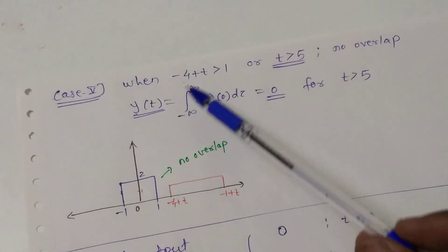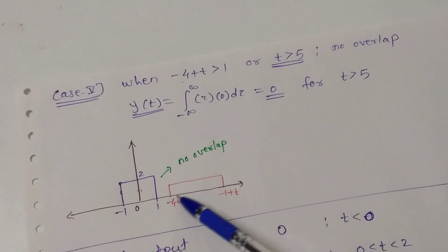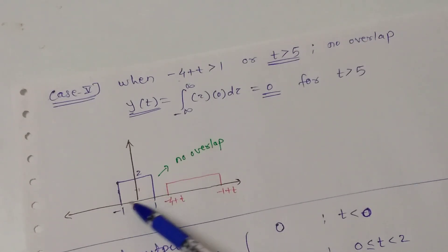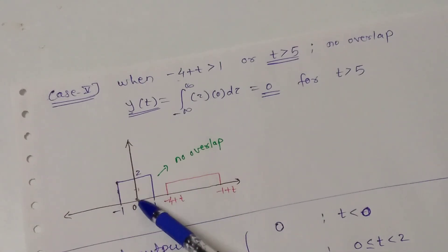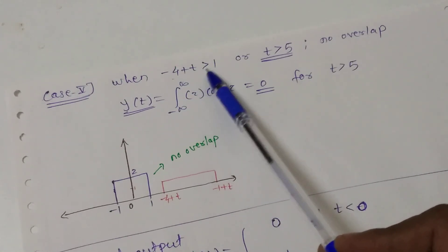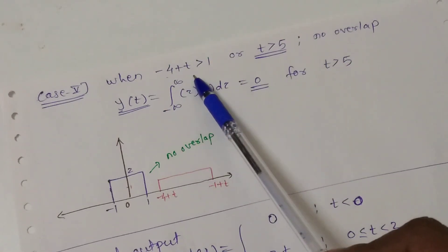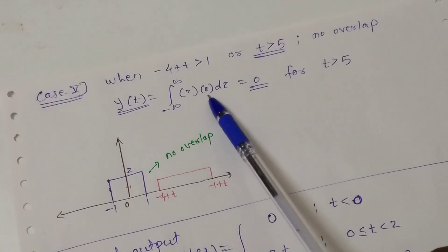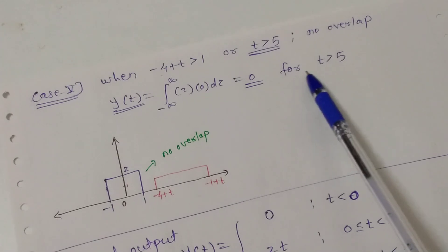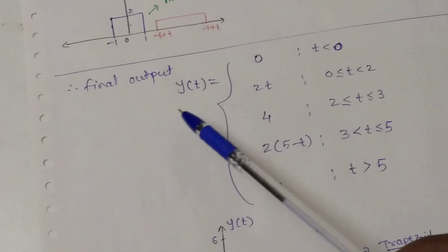Case 5: When (-4+t) > 1, that is t > 5, the left end of h(-τ+t) has passed beyond the right end of x(τ). One signal is present but the other is absent over the interval -1 to 1, so there is no overlap again. The multiplication always gives 0, so y(t) = 0 for t > 5.